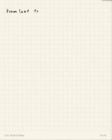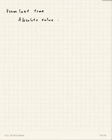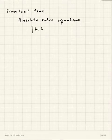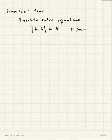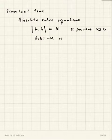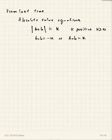From last time, we talked about absolute value equations. We saw that if you have the absolute value of Bob equal to K, and K is greater than or equal to zero, then there are two ways that could be true: Bob could equal negative K or Bob could equal positive K, because there are two numbers that have an absolute value of K.